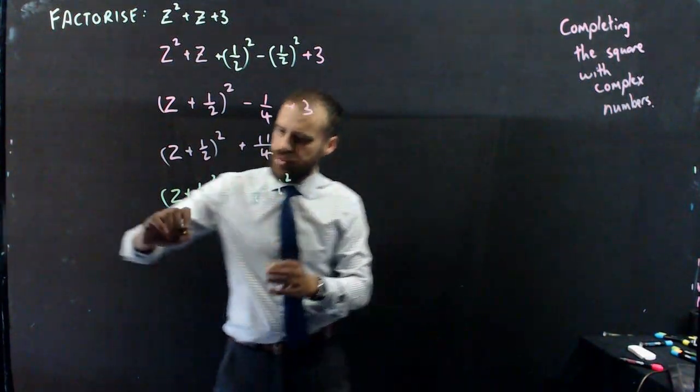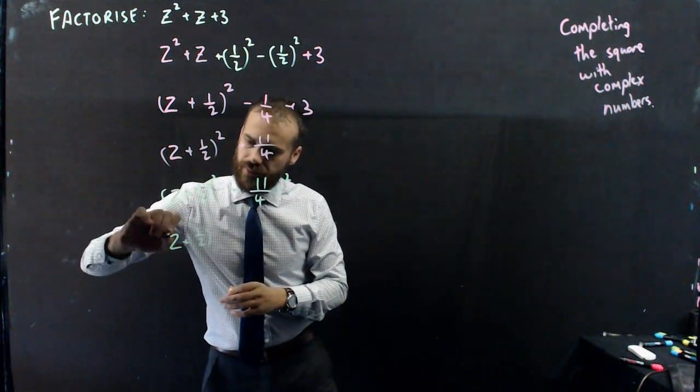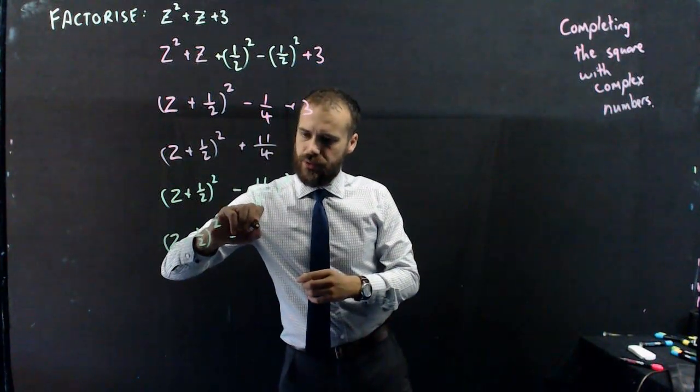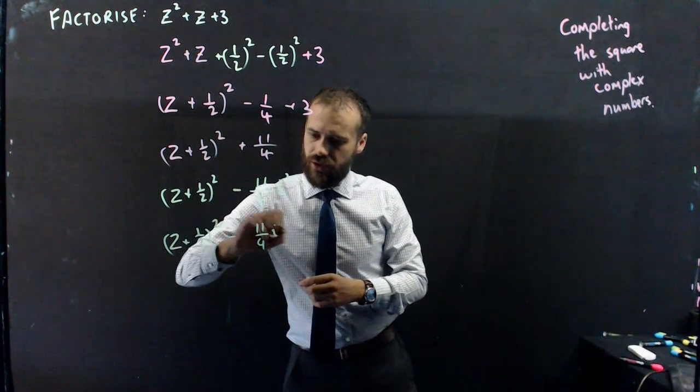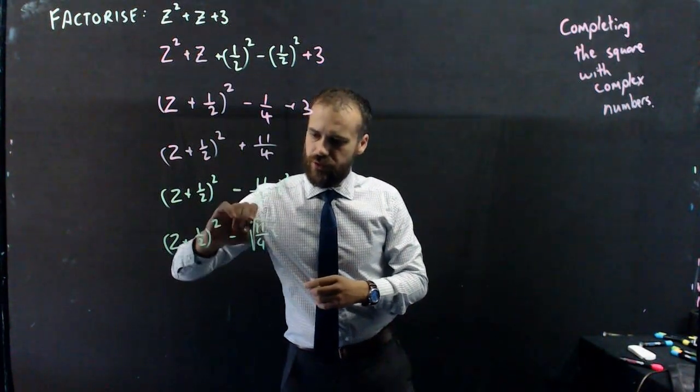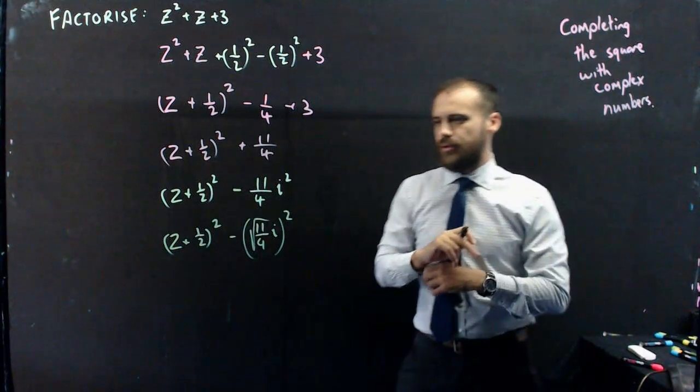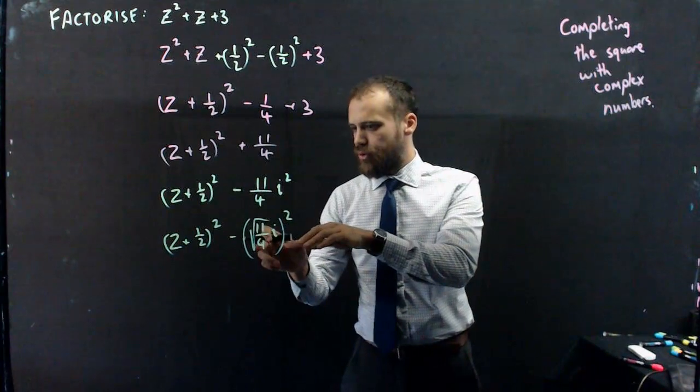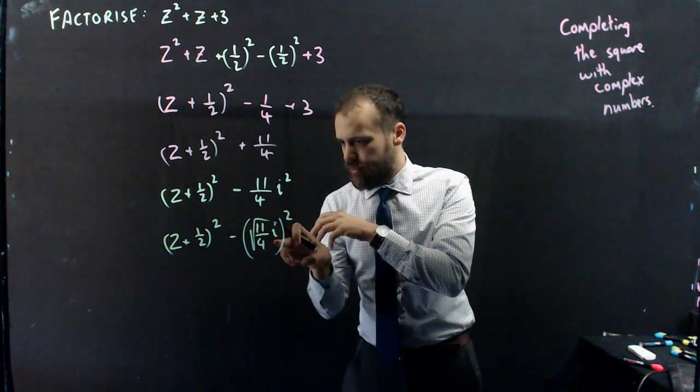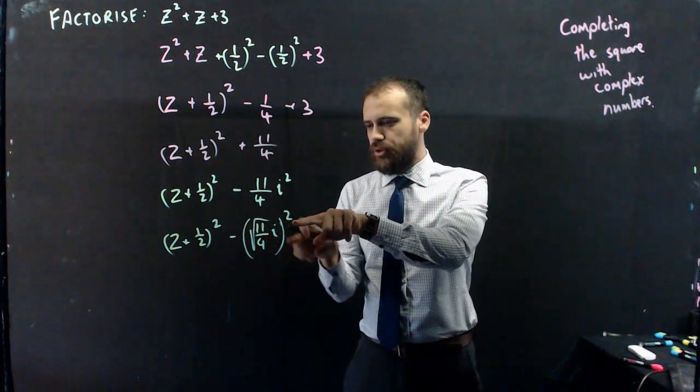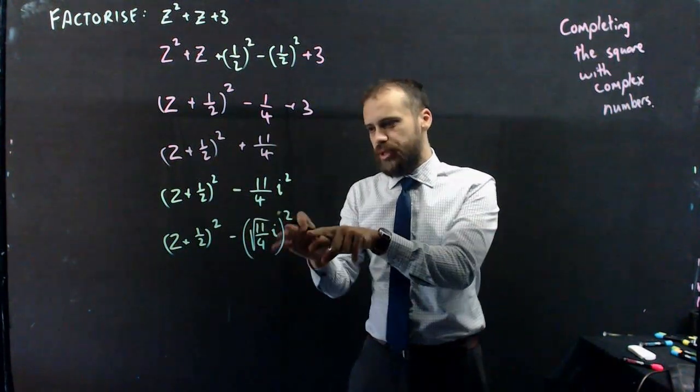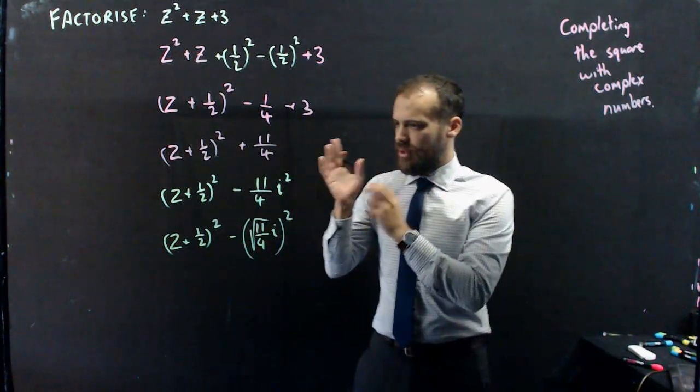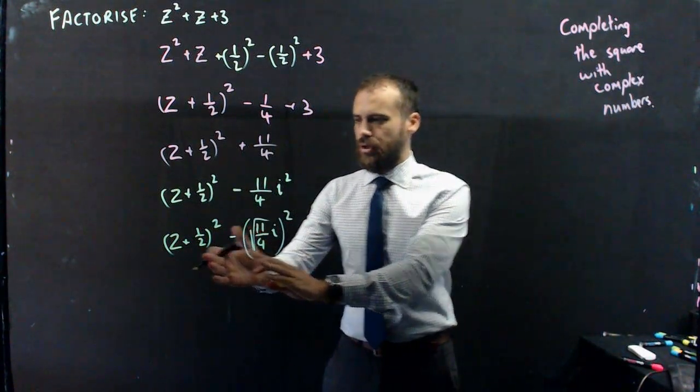Well, let's take a look at what we can do in another line here. Minus, let's put 11 over 4 and i and a square root, squared. So we take our 11 over 4, we put it in a square root, we take our i, we put it just there, and we square the lot. If we then were to expand that, we'd end up back where we started again. But why have we done that? We have a difference of two squares.